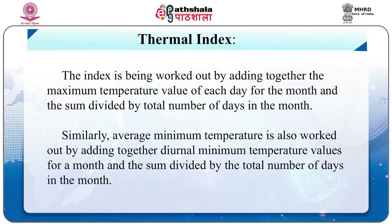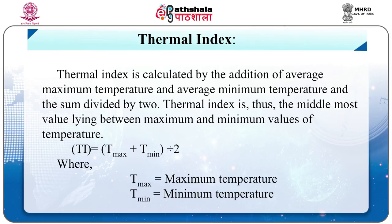Thermal Index: The index is worked out by adding together the maximum temperature values for each day in a month and dividing the sum by total number of days. Similarly, average minimum temperature is calculated by adding diurnal minimum temperature values for a month and dividing by total days. Thermal Index is thus the average of maximum and minimum temperatures: TI = (T_max + T_min) / 2.